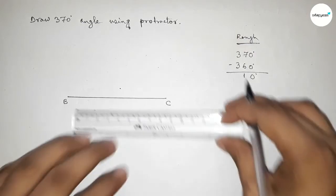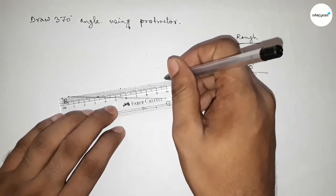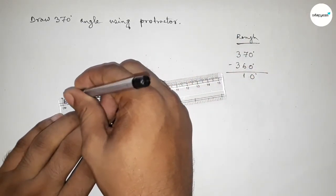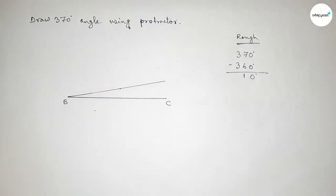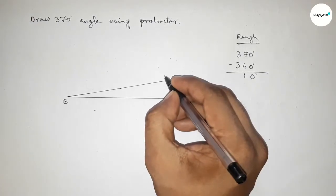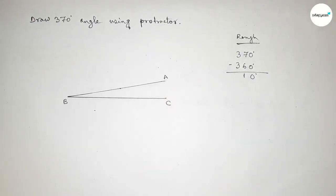Now joining this line, and taking a point here. So here taking point A, now we have to draw